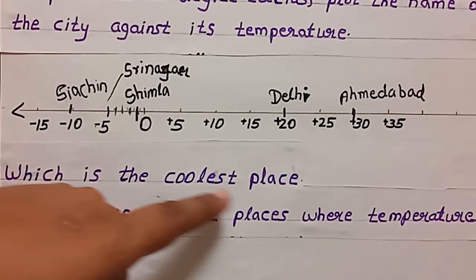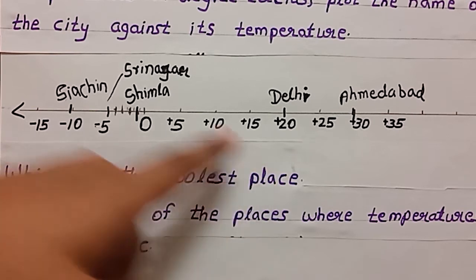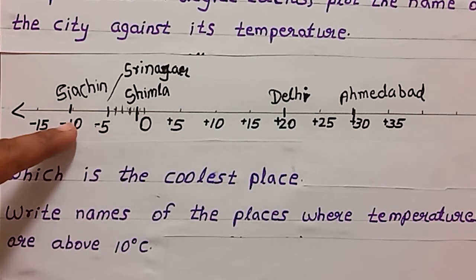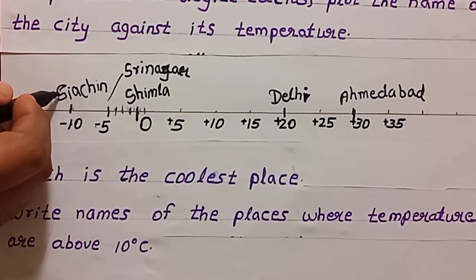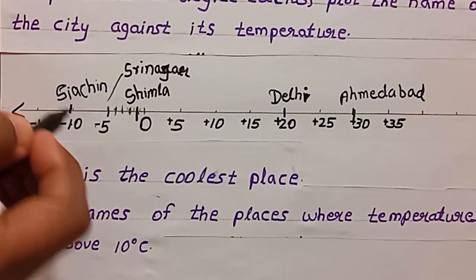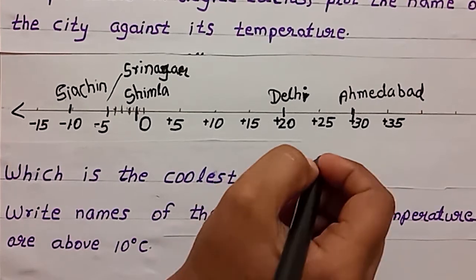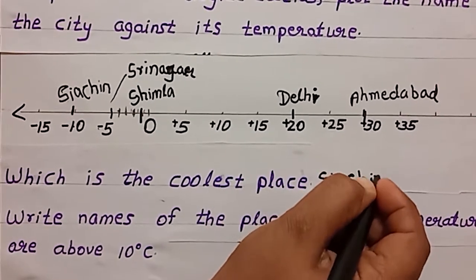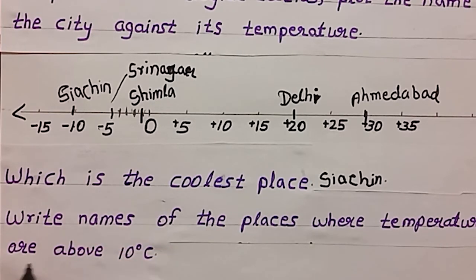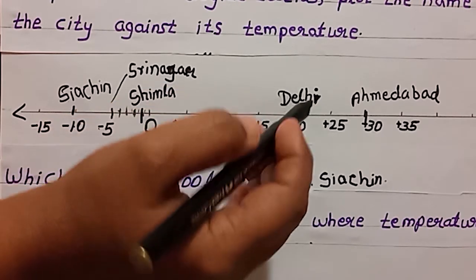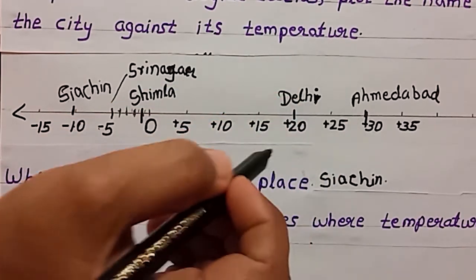Which is the coolest place? We know that negative numbers will give us the least values. So negative 10, that is Siachin — Siachin is our coolest place among these places. Write the names of the places where temperatures are above 10 degree Celsius. That is 10 degree and above, so Delhi and Ahmedabad are our answers.